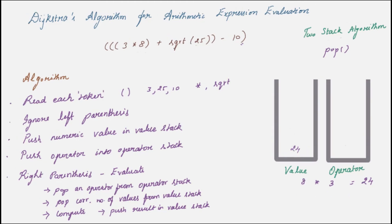Now let's evaluate the remainder of the expression by following these steps. We have completed until here. Next token is an operator. So push that operator in the operator stack. The next token is square root which again is an operator. So push that into the operator stack. Then you have a left parenthesis which you can ignore. After that you have 25 which is a numerical value. So push that in the value stack.